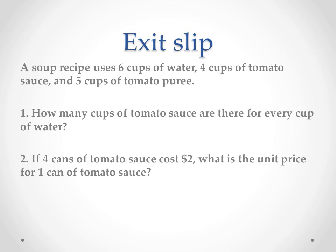As we come to the end of this lesson, you have an exit clip. I hope you remember all the things from the last three days about ratios, equivalent ratios, and today, unit rates. Your exit clip: a soup recipe uses six cups of water, four cups of tomato sauce, and five cups of tomato puree. Number one: how many cups of tomato sauce are there for every cup of water? Number two: the four cups of tomato sauce costs $2 — what is the unit price for one cup of tomato sauce? Good luck!